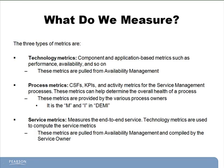There are three main types of metrics that we pull here in the Continual Service Improvement phase. Technology metrics are the first type of metric that we pull, and these are component and application-based metrics such as performance, availability, downtime, and so on.